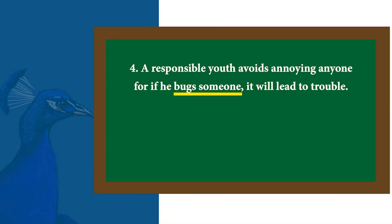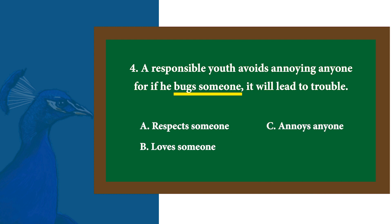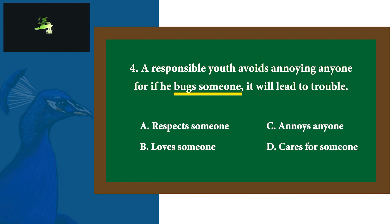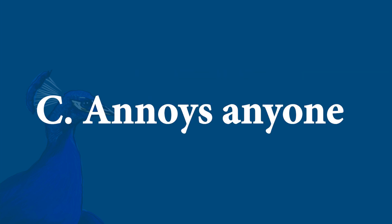Number 4: A responsible youth avoids annoying anyone, for if he bugs someone it will lead to trouble. A. Respects someone B. Loves someone C. Annoys anyone D. Cares for someone. Time's up! The correct answer is letter C, Annoys anyone.